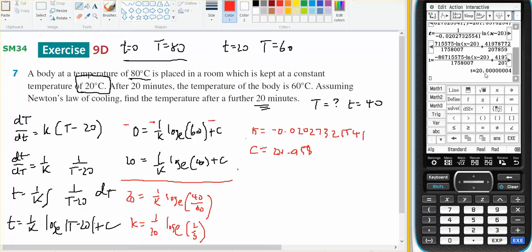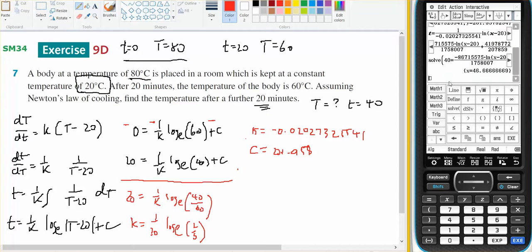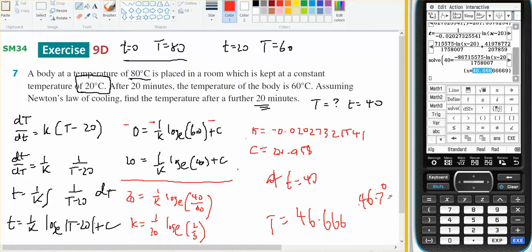So what am I wanting to find out? When T equals 40, and I wish to solve for X. And the temperature should be 46.6666, so T equals 40, the temperature should be 46.6666 recurring, which is 46.7 degrees Celsius, or 46 and 2 thirds degrees Celsius.